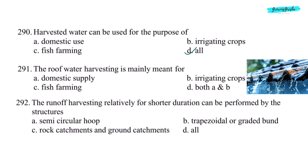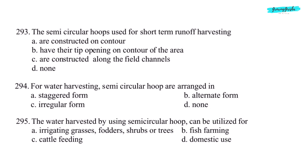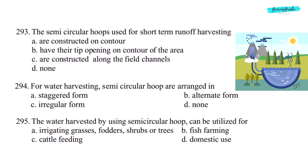Next question: roof water harvesting is mainly meant for — option A, domestic supply. Next question: runoff harvesting for relatively shorter duration can be performed by the structures — option D, all of the above.